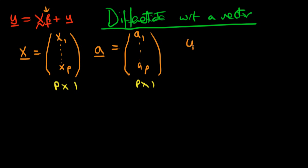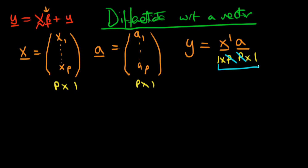Let's say we form something by taking the transpose of x and multiplying it by the vector a, and we're calling it y. What dimensions does y have? We can work this out by thinking about the dimensions of each term. x transpose is 1 by p, since we've transposed the column into a row of p entries. Our a vector is p by 1. So we have a 1 by p multiplied by p by 1. In matrix multiplication, the inner indices cancel, leaving just the outer indices — so we get a 1 by 1, meaning y is actually a scalar.